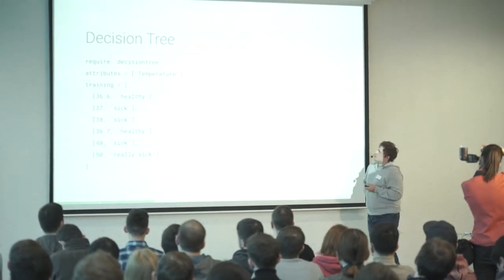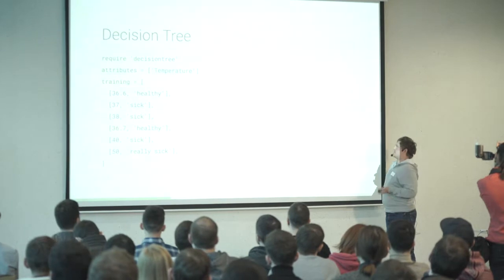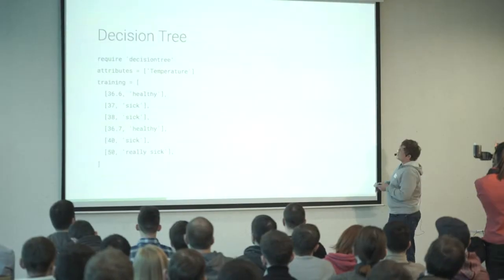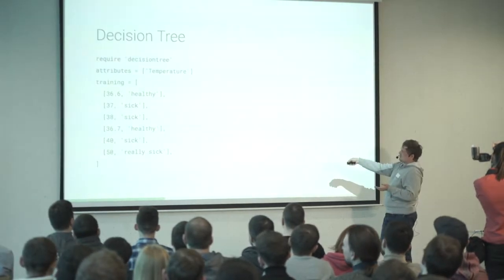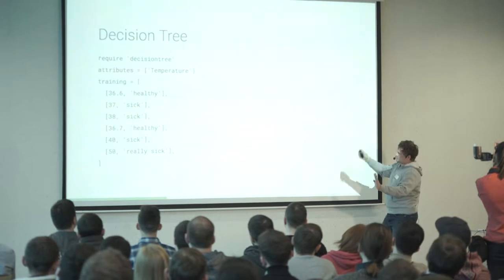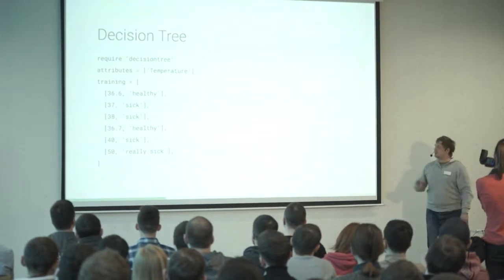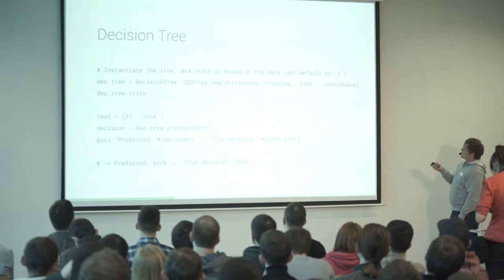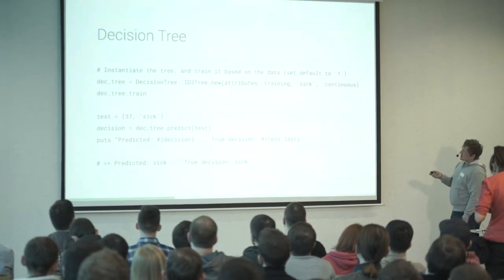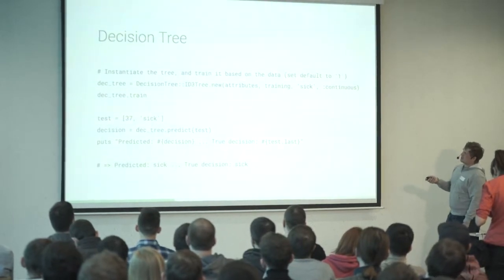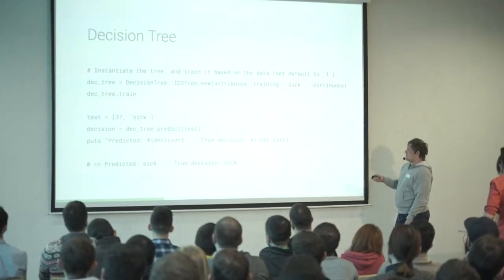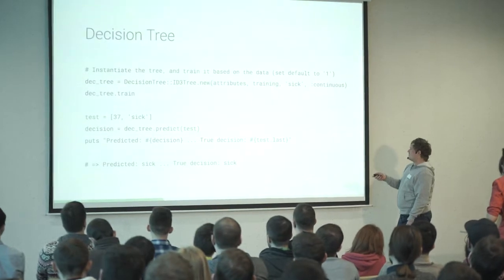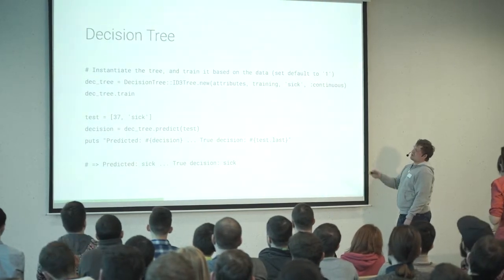For Ruby there's a decision tree gem. Here's the example: I train it with an attribute 'temperature' — it provides temperature and state. Of course 40 and 50 degrees means 'dead,' I think — maybe not really sick, already dead — but still. I begin training, provide attributes, training type 'continuous,' and train. Then I provide just this array with one number, and it gives me a decision like 'sick,' which is exactly what I expected.